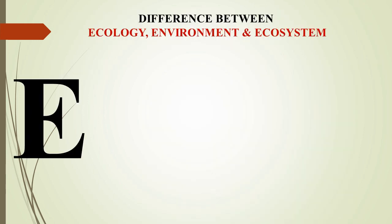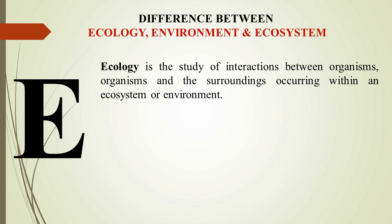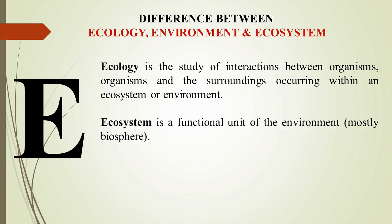Now we'll cover the concept of three E's. What is the difference between Ecology, Environment, and Ecosystem? Ecology is the study of interactions between organisms and their surroundings — there is basically an interaction when we talk about ecology. Then ecosystem is a functional unit of that ecology; it means it performs and is mostly part of the biosphere.